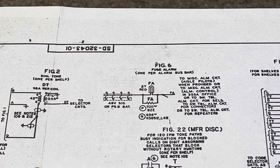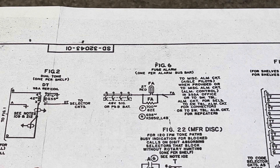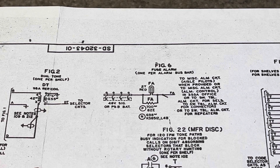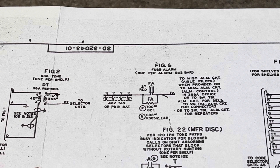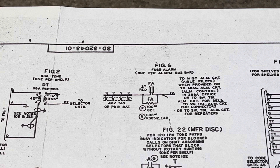In the larger central offices, there were what were referred to as aisle pilot lamps. You would have one fuse alarm, release alarm, and permanent signal alarm relay for each individual aisle. Then, at the end of the aisle towards the top of the rack would be a series of lamps — white, red, yellow, and green — to let you know that there was a problem within that aisle or lineup of equipment.